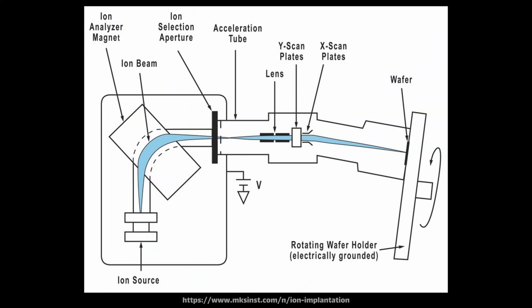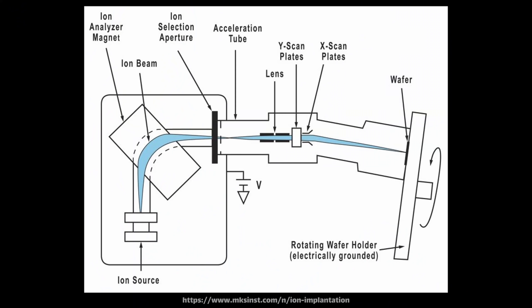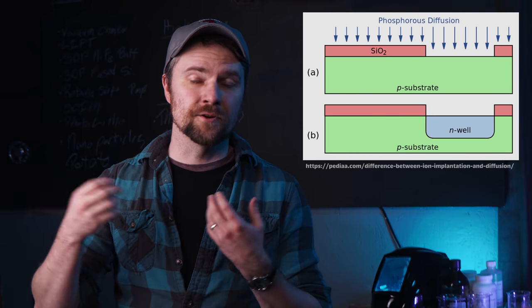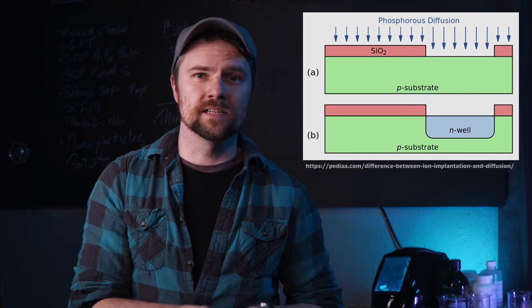The main advantage of ion implant is the targeted nature of the process. These particles are flying down in a perfectly straight collimated line, which means if you put a mask over your wafer, only the stuff that's allowed through the mask will actually implant. There's no thermal process so stuff doesn't diffuse away. This is much more scalable to the very small feature sizes we see in chips today.